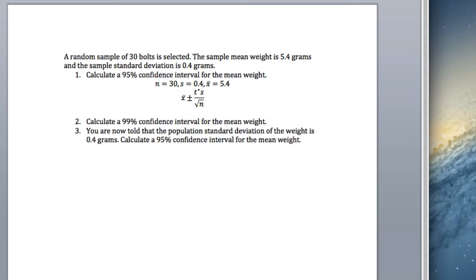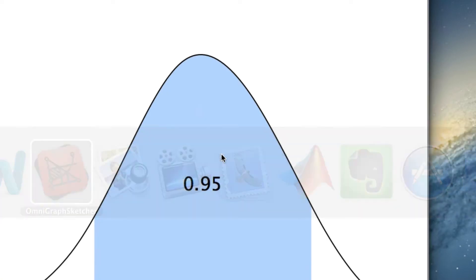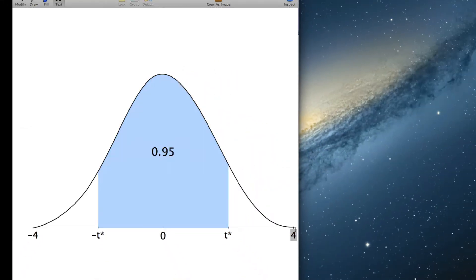So now we can just put all the values in. So x bar is 5.4, plus minus. So we need to get t-star. How do we get t-star? Well, if we look here, here's a t-distribution, a bell-shaped t-distribution. What we want is we want to find the values, such that between minus t-star and t-star, because we've got 95% confidence interval, you're going to have this area is going to be 0.95.